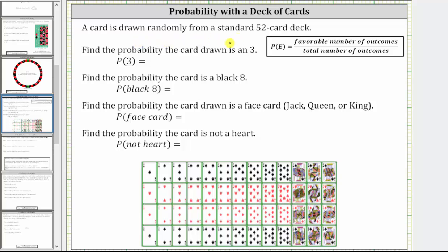A card is drawn randomly from a standard 52-card deck pictured below. We are asked to determine the following probabilities. Remember, the probability of an event E is equal to the favorable number of outcomes divided by the total number of outcomes. In this case, because we are drawing one card from a 52-card deck, the total number of outcomes will always be 52.